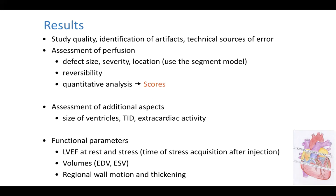Extra-cardiac activity is also very important in order to finalize your scan interpretation. Very importantly, you need to add information about functional parameters: ejection fraction at stress and at rest. It is very important to indicate the time of stress acquisition after injection, because if you acquire after 45 minutes you are probably not able to find any stunning, whereas if you acquire after 15 minutes you may identify stunning in some cases. Ejection fraction is a ratio, so it is important to also report volumes — diastolic and systolic — and regional wall motion and thickening abnormalities, even in the presence of LBBB.